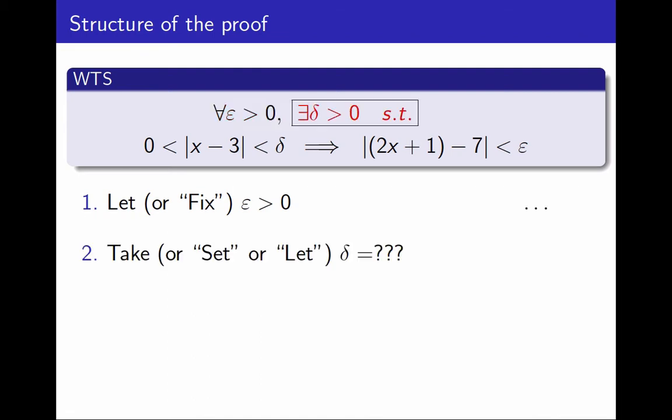Second, I need to show that there exists a δ with a certain property. The easiest way to do this is to say what I am taking as δ. And since I first fixed ε, I can now take δ depending on ε. The order matters a lot.